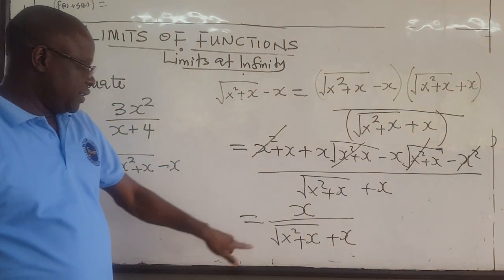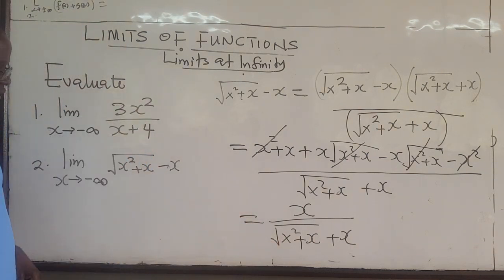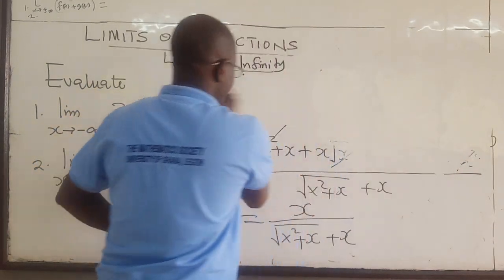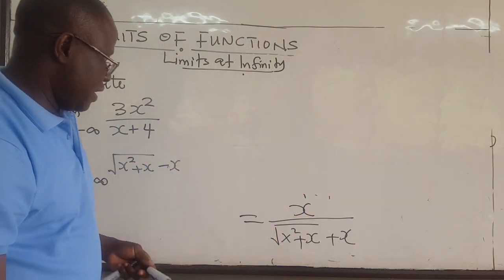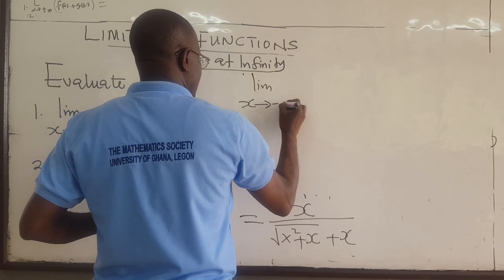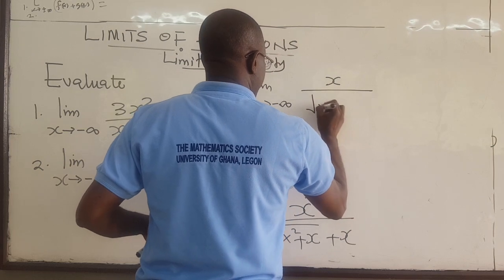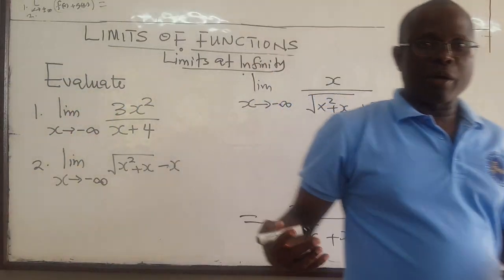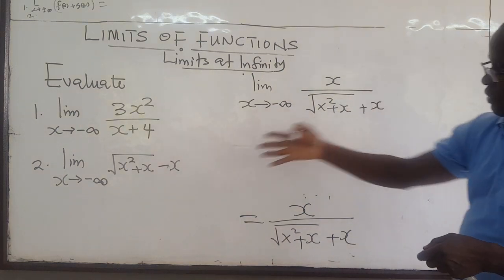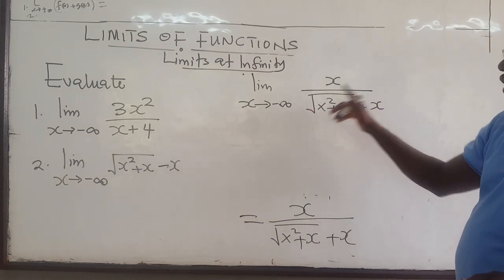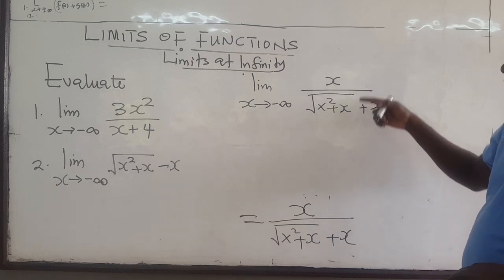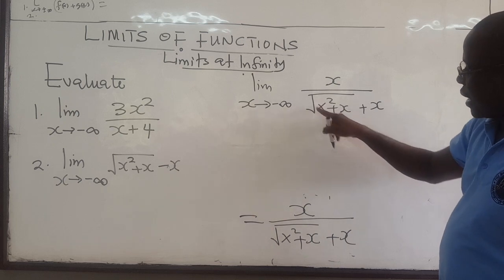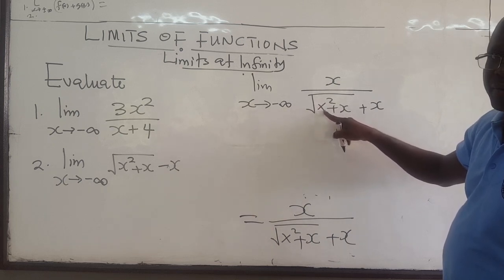Now we need to find the limit as x goes to negative infinity of x over square root of x squared plus x, plus x. This is now like a rational function, so we divide the numerator and denominator by the highest power of the denominator. The highest power is x — not x squared — because the x squared is under the square root, and square root of x squared is x.